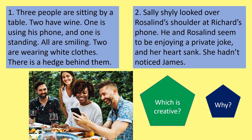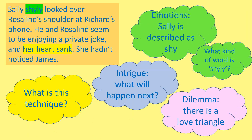So the creative piece is piece two. Why is piece two more creative? Well, it describes Sally's emotions — she's described as shy. What kind of word is 'shyly'? It's an adverb. There's intrigue — what will happen next? There's a dilemma. There's a love triangle. And lastly, 'her heart sank' — what's this technique? It's a metaphor.